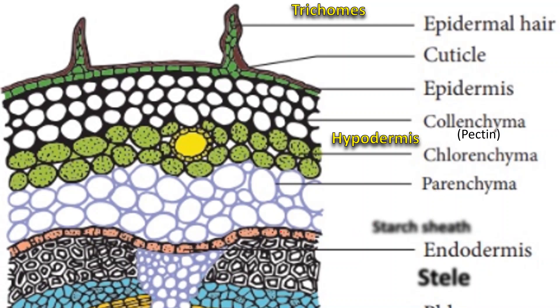The innermost layer of the cortex is called endodermis. It contains barrel-shaped, compactly arranged cells. It is also called starch sheath.